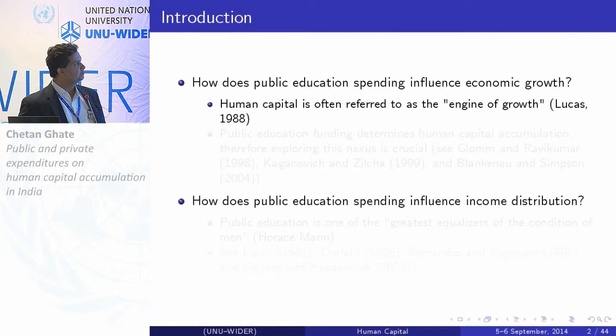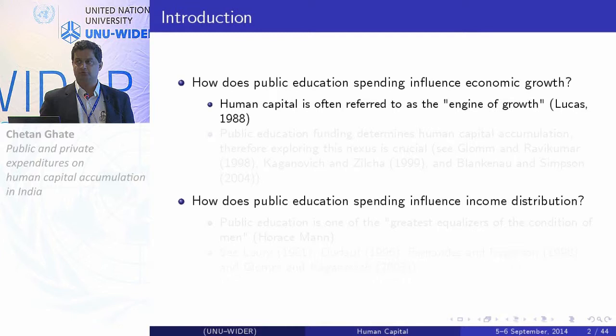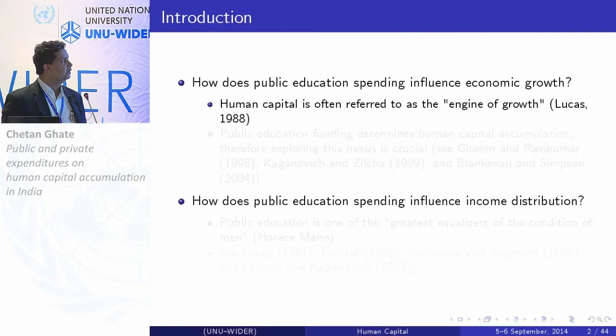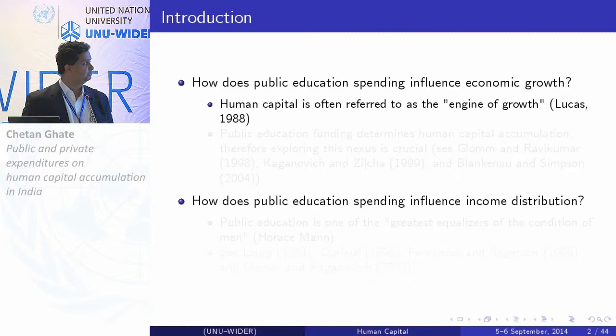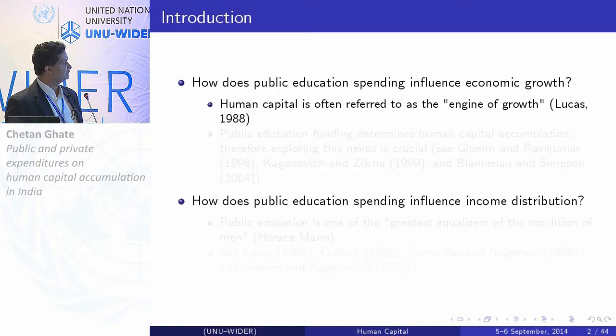The broad motivation is based on two strands of the human capital growth distribution literature. There's a huge set of papers in both. In the first strand, when you ask how public education spending influences economic growth, the typical mapping is from public expenditures to human capital accumulation to growth, and there are a variety of assumptions made on that relationship — on the human capital accumulation function. There are many papers that explore this nexus.